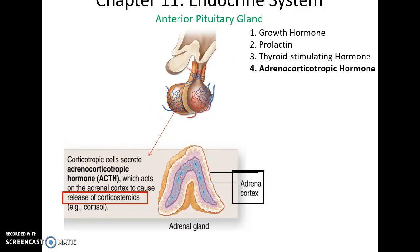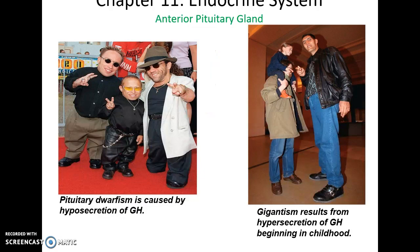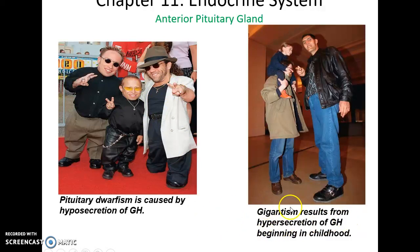The anterior pituitary also produces adrenocorticotropic hormone, which stimulates the adrenal cortex to release corticosteroids. Follicle-stimulating hormone and luteinizing hormone affect the gonads — either the testes or the ovaries — to affect their production of sperm or oocytes. If there's a disorder causing hyposecretion of growth hormone, this could lead to pituitary dwarfism. Hypersecretion of growth hormone could lead to gigantism, where the person grows much taller than expected.